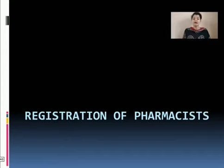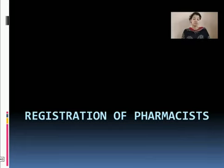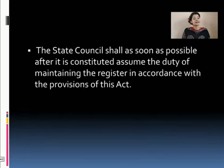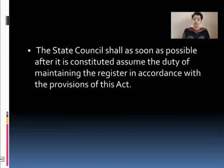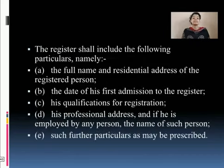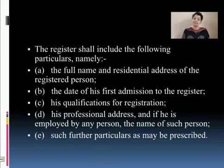The names of registered pharmacists are basically entered in the registers which are maintained by different state councils and central councils. The state council, as soon as it is constituted, has the duty to maintain a register in accordance with the provisions laid down in the Pharmacy Act. There are certain particulars which are compulsory to be there in the register. The first is that the full name and the residential address of the registered person should be mentioned.